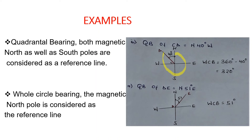The last example: we have a Quadrantal Bearing of DE — North East 51 degrees. The Whole Circle Bearing of this Quadrantal Bearing is measured from the north clockwise up to the line, so it will remain 51 degrees.